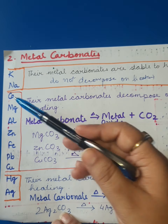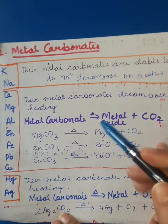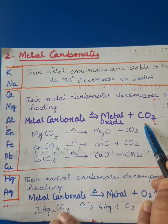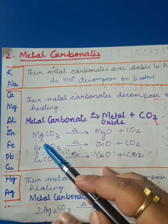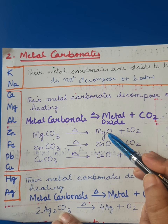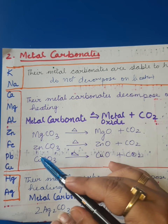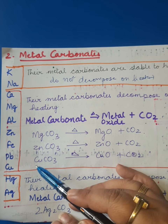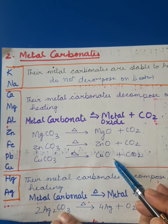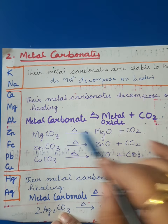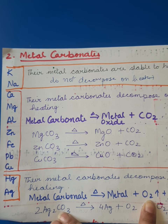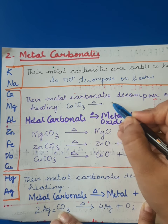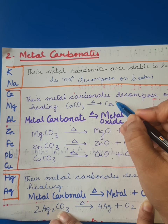For the second category — calcium to copper — their metal carbonates decompose on heating. The basic equation is: metal carbonate on heating decomposes into metal oxide and carbon dioxide. For example: magnesium carbonate → magnesium oxide + CO₂; zinc carbonate → zinc oxide + CO₂; copper carbonate → copper oxide + CO₂; calcium carbonate CaCO₃ → CaO + CO₂.